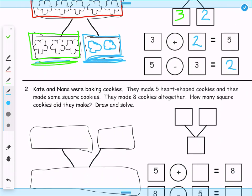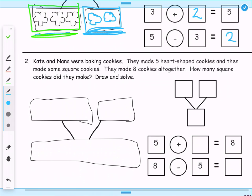So now we're going to come down and look at this other problem. Kate and Nana were baking cookies. They made 5 heart-shaped cookies and then made some square cookies. So we're not sure how many square cookies. They made 8 cookies altogether. How many square cookies did they make? So here's what we're going to do. We're going to start off by finding our whole. So they did 8 cookies all together. So that's how we know that this is our whole.